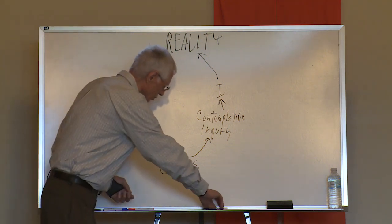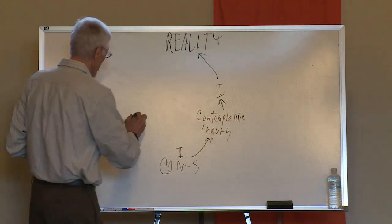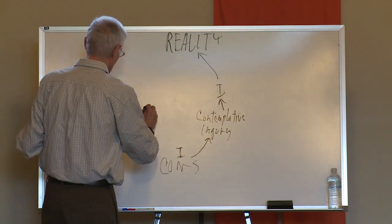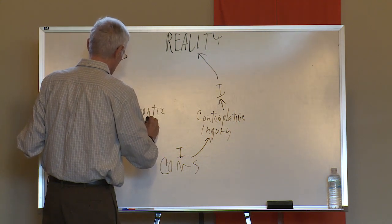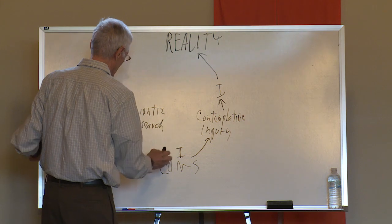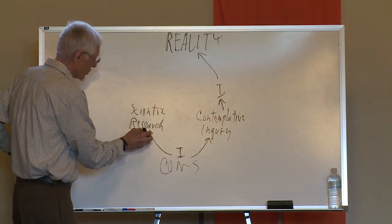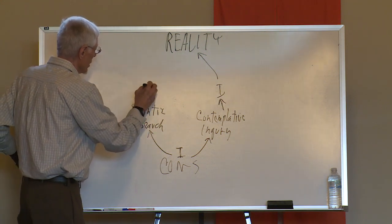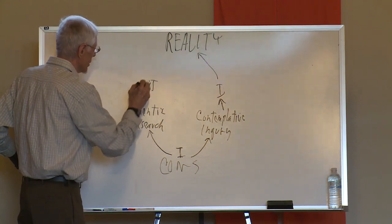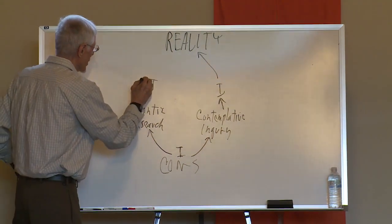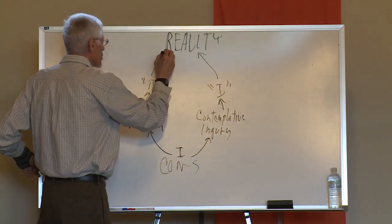Now there's another approach to truth, equally important, and in fact we have made more important, which we might call scientific research. And this is consciousness using the method of scientific research to look at not I, not consciousness, but it, some kind of it, which is an approach to reality.